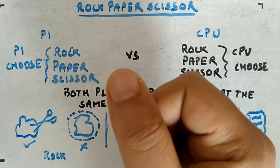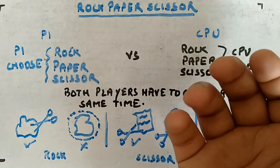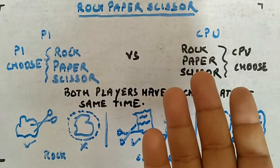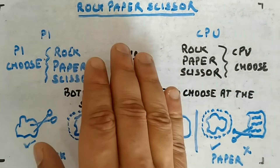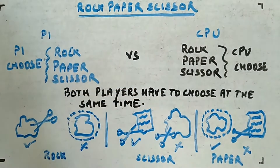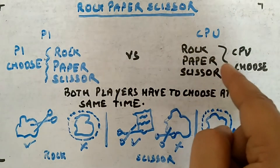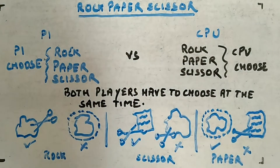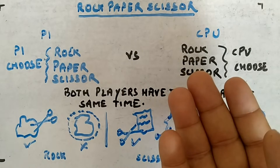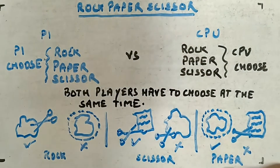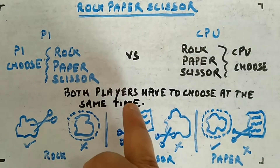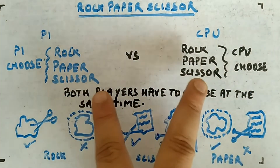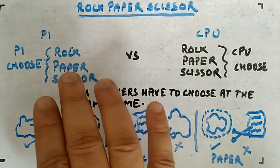Rock paper scissors is a game we play with our hands, usually played among children. You choose out of rock, paper, or scissor, and at the same time the other player chooses as well. Depending on what both players chose, the result comes and one of them wins. Both players have to choose at the same time.